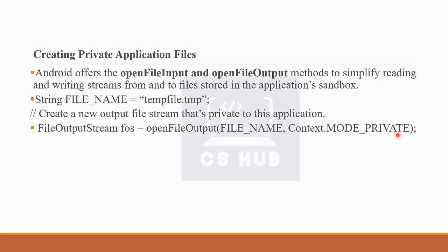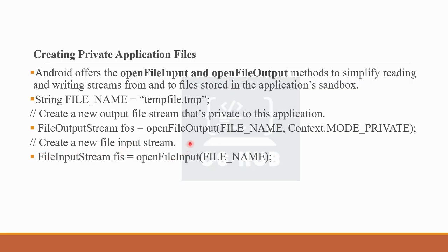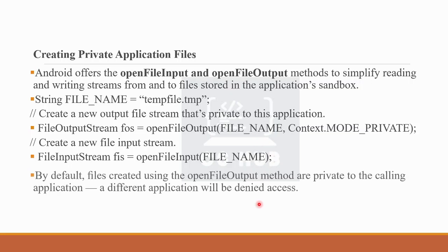The output file stream will be private by default. For example: FileOutputStream fos = openFileOutput(fileName, mode); and FileInputStream fis = openFileInput(fileName); By default, files created using the openFileOutput method are private to the calling application. A different application will need special access mode to read or write those files.